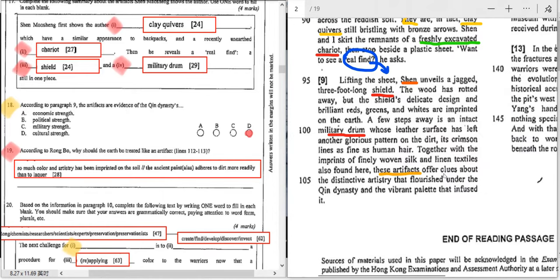So if you read on from line 102, together with the imprints of finely woven silk and linen textiles also found there, these artifacts, keywords, similar words again, artifacts, offer clues. In the question, you find the word evidence. In the passage, you don't see the word evidence, but you find the word clues, hints, tips, which is a very similar word to evidence. And you can be almost sure that here lies the answer.